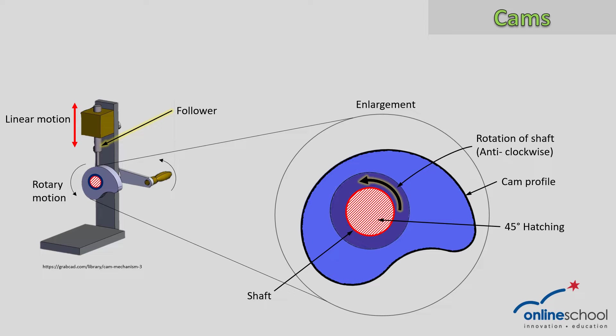Attached to that handle through an axle is a cam disc profile. The axle will serve as a cam shaft, and as the handle is turned either clockwise or anti-clockwise, that will have a direct effect on the follower that is resting on the outside disc profile.